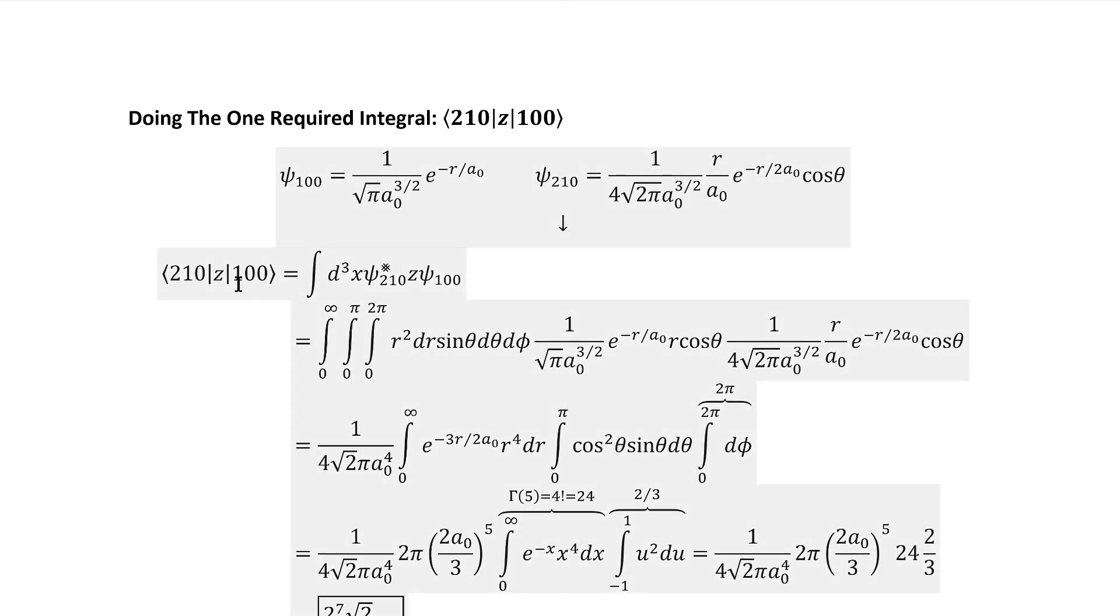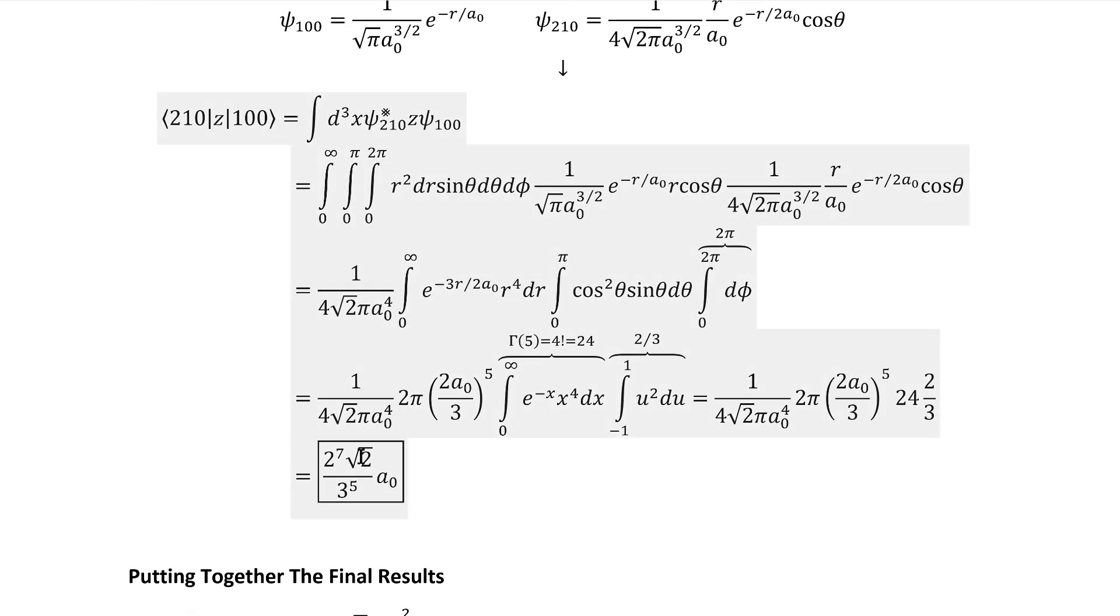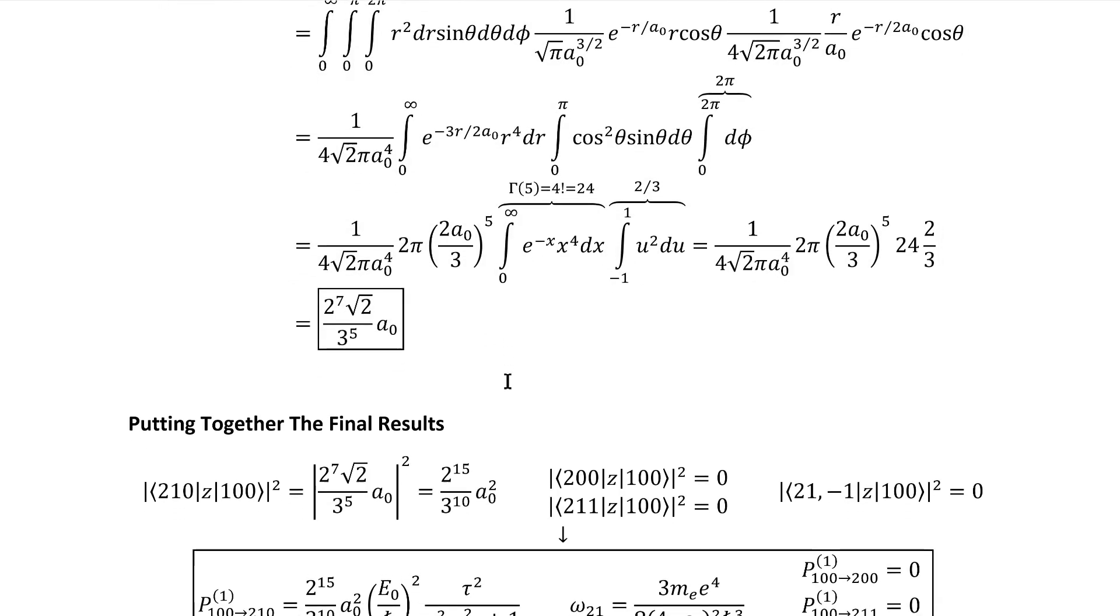And, of course, that's the 100 to 211 matrix element of Z. Remembering our wave functions, we can plug that in immediately and start working down the integral. It turns out to be relatively trivial compared to what some integrals in physics turn out to be, and we get this elegant result for it.